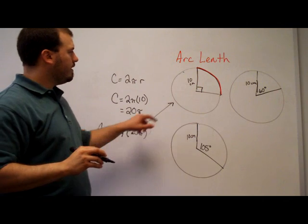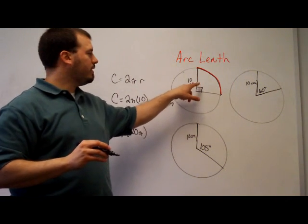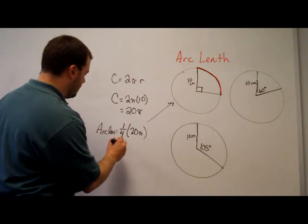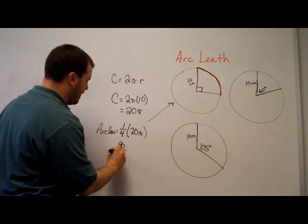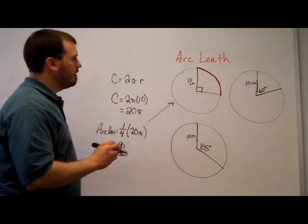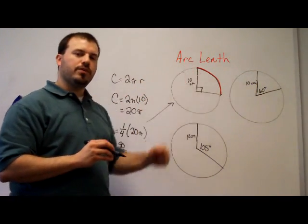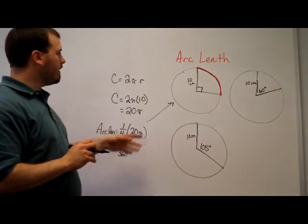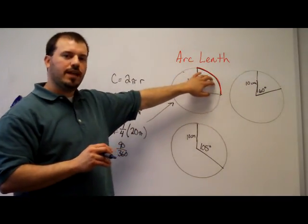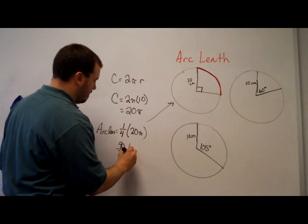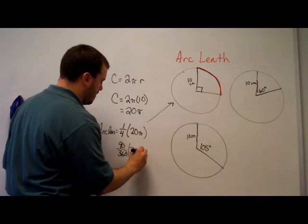Well, one-fourth is, how do I know that that's one-fourth? Well, I know that this is 90 degrees, and that the full circle's measure all the way around is 360 degrees. That's how I know that I have one-fourth of a circle, 90 over 360 times 20 pi.